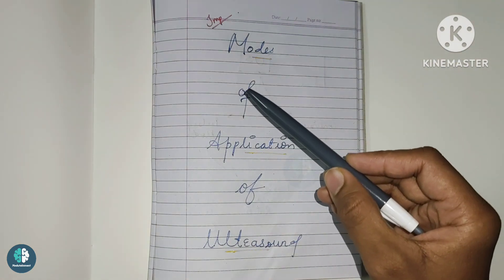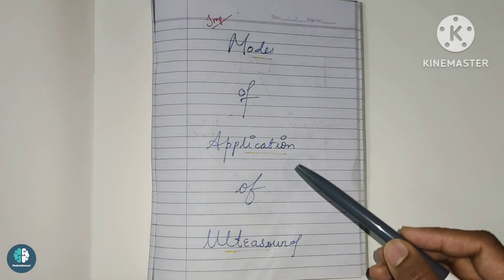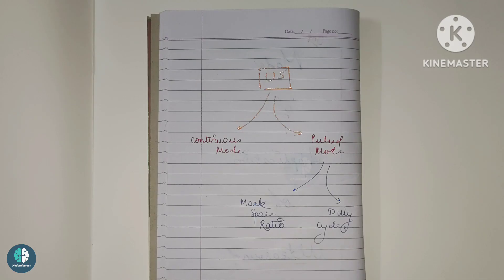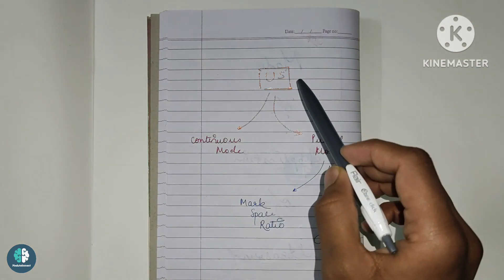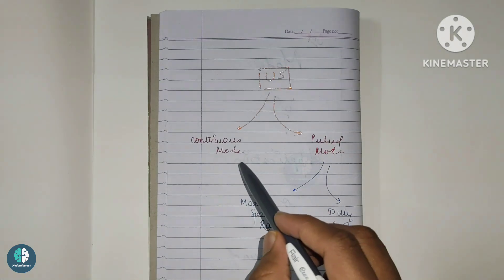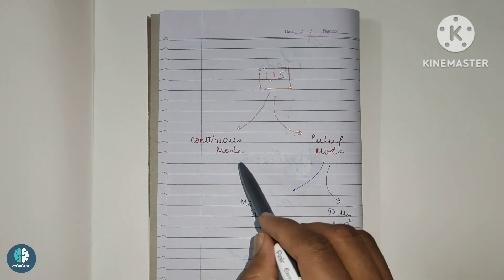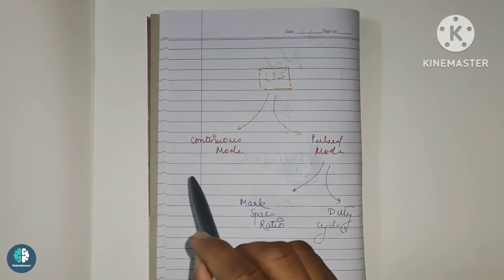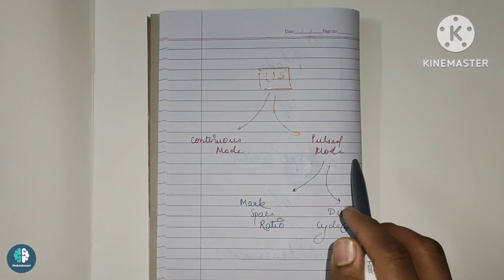So the topic for today is the modes of application of ultrasound, that is to say US. So how many modes of application of ultrasound are there and how it is used? We will see how the US is used in various modes of application. Basically the ultrasound is used in two modes — the first one is the continuous mode of application and the second is the pulsed mode of application. So we have basically two methods: continuous and pulsed.